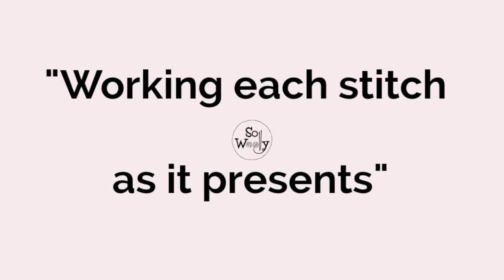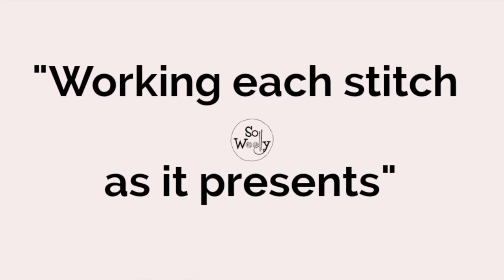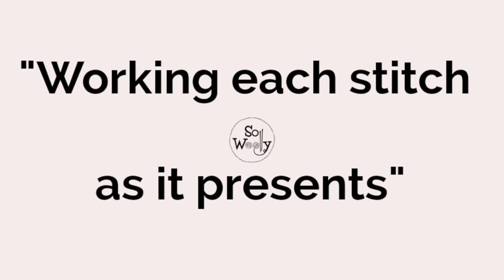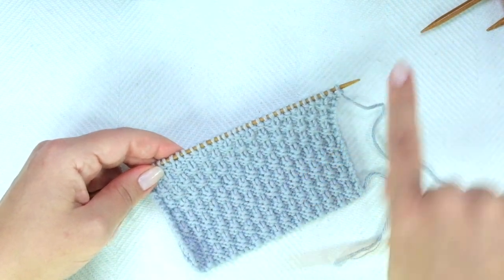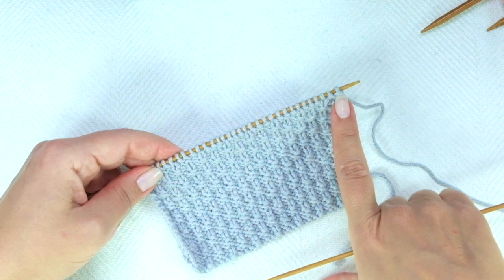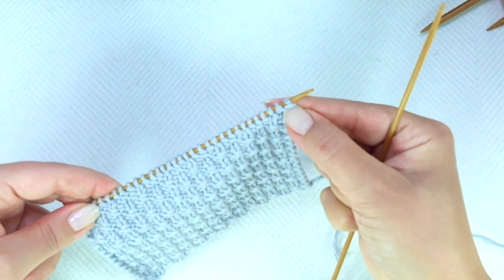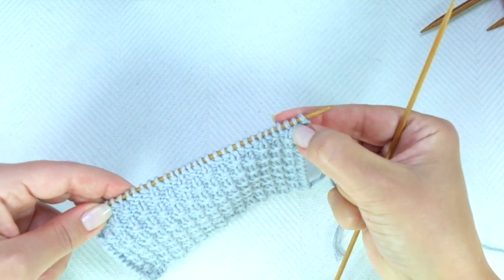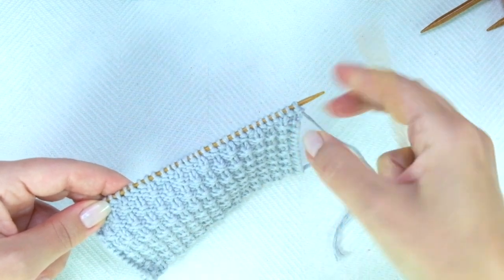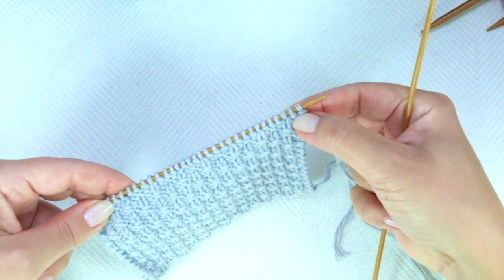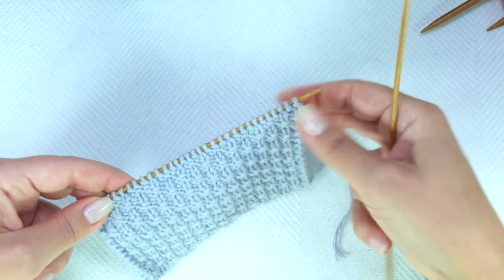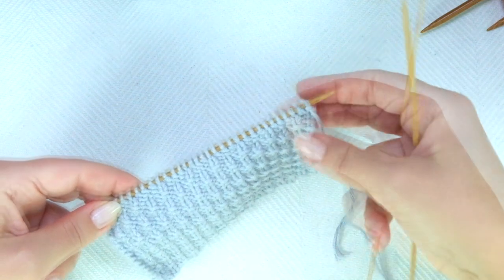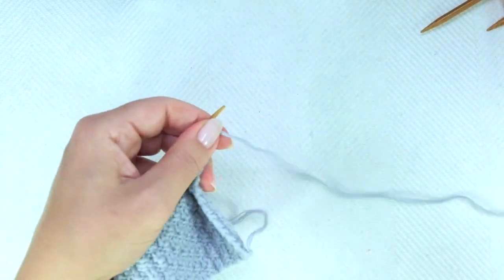Working each stitch as it presents. This is a pretty recurrent phrase in instructions of many stitch patterns which combine knitting and purling. It simply means that we need to do what we see. If we see a purl stitch — it looks like a knot or a hyphen — we purl that stitch and bind off. If we see a knit stitch — it looks like a V — we knit that stitch and bind off.